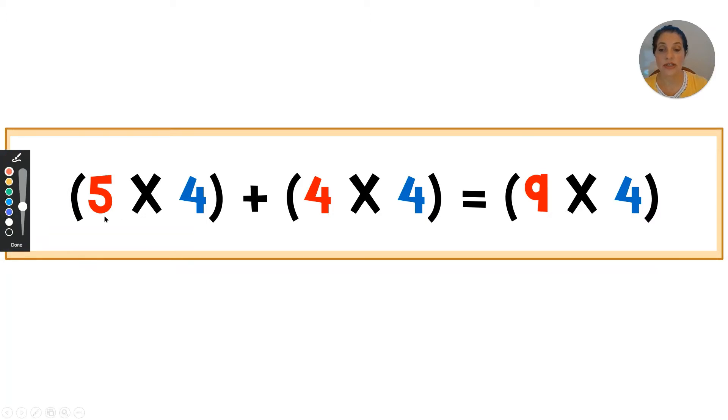So looking at this equation, you can see that this five plus this four is equal to this nine. You'll also notice that the second factor always remains the same. We're talking about equal groups of four.